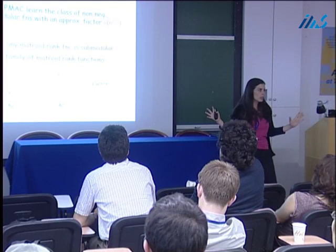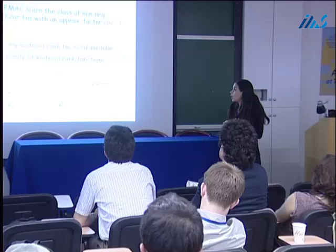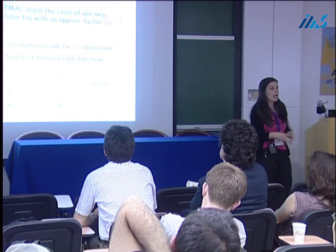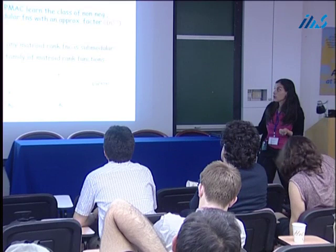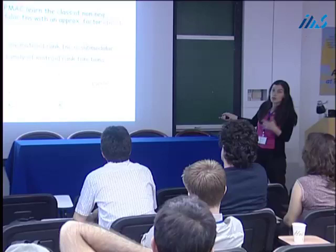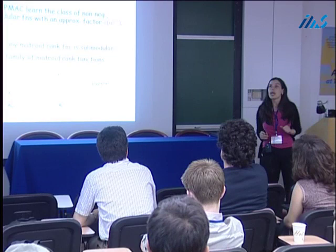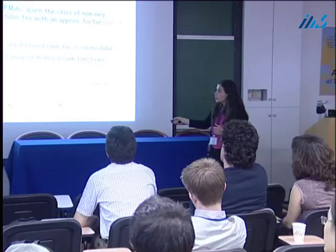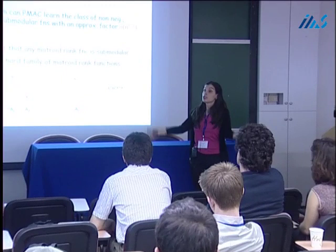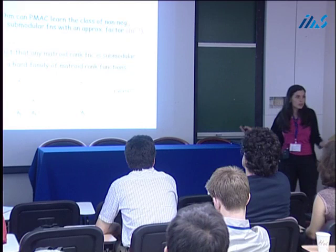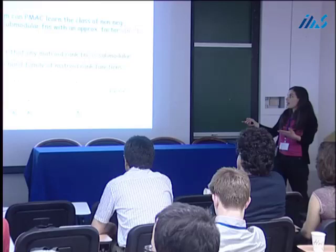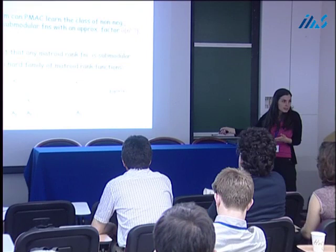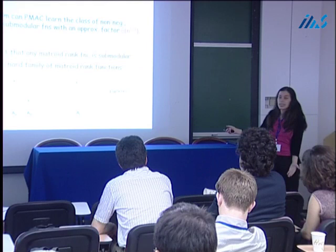Here is the high-level plan of the proof. First, we use the fact that any matroid rank function is submodular. We construct a new hard family of matroids with the following properties: there exist super-polynomially many subsets A1, A2, ..., AL of the ground set, and there exist two values — high and low — separated by roughly an N-to-the-one-third multiplicative factor, such that for any assignment of high and low on these subsets, there exists a matroid in our family whose rank function achieves that assignment. This gives us what we want: if we pick the target function at random by flipping a fair coin to decide between high and low on these subsets, no learning algorithm can do better than randomly guessing on subsets it hasn't seen in training.